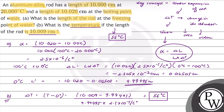The length of the rod at the freezing point is equal to 9.99495 centimeter. Hope you understood.